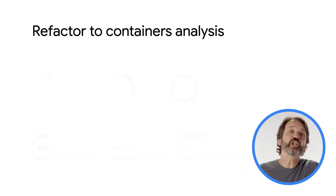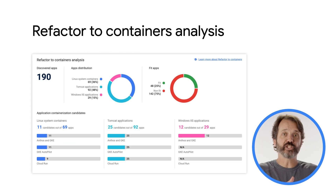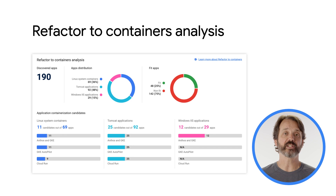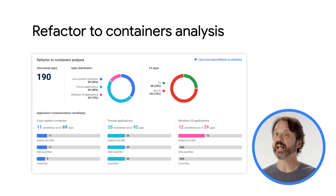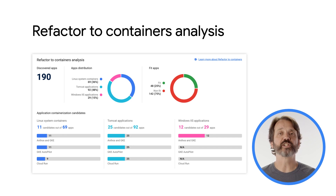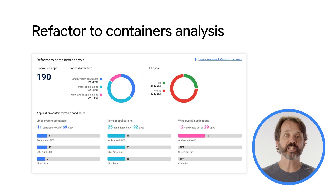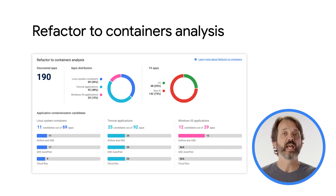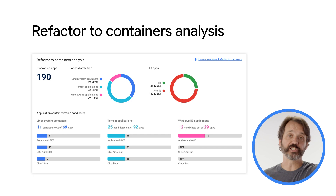Now, let's jump into the next section of the report: the Refactor to Containers Analysis. In this section, you can see how many applications were discovered and their classification into the three kinds of supported containers – Linux, Tomcat, and IIS – and how many of them are fit for containerization.